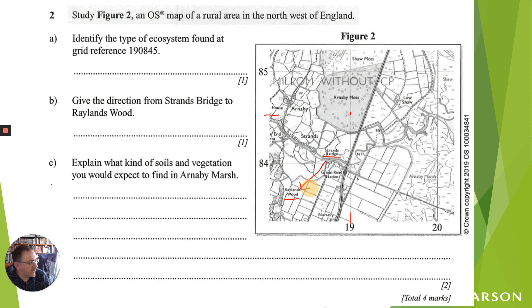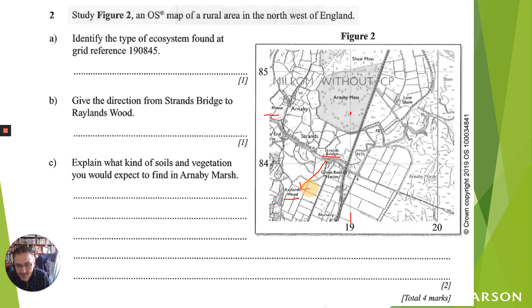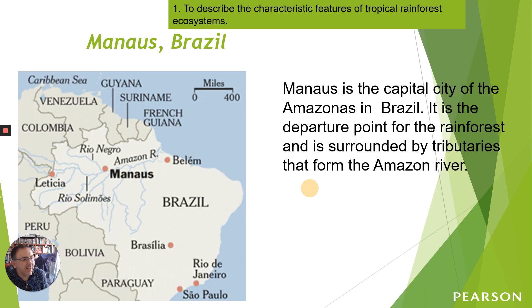What kind of soils and vegetation would we find in the marsh? The soils are going to be very low in nutrients and very waterlogged. For vegetation, we're going to find plants suitable for creatures such as dragonflies - very water-tolerant grasses and similar aspects. Let's move on to look at the tropical rainforest.